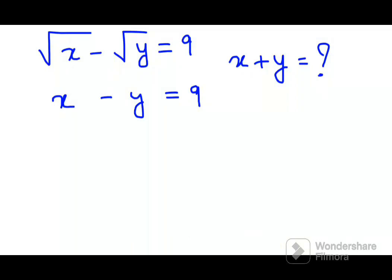Welcome everyone. So today I'm going to solve a tricky Olympiad question, but this is actually a very nice Olympiad question to be honest. We'll try and figure out what will be the answer for x plus y when the given situation is root of x minus root of y equals 9 and x minus y is also equal to 9.